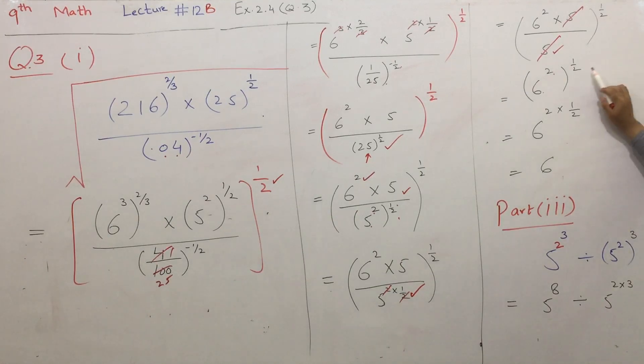This is 5 to the power of 1 by 2, at least step 1, 2 is 1 by 2, and what is the power of 2? Cancel and simplify, the final answer is 6, part 1 answer is 6.